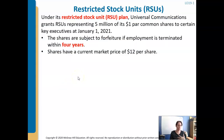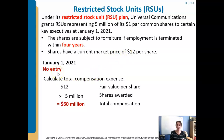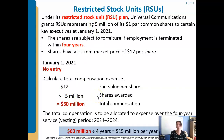Under its RSU plan, Universal Communications grants RSUs representing 5 million of its $1 par common shares to key executives on January 1st. Shares are subject to forfeiture if the employee is terminated within four years. The shares have a current market price of $12 per share. On January 1st, when awarding them, you record the compensation. These people are earning them over four years, so you spread the cost over four years. Total cost is $12 per share times 5 million shares = $60 million, so you record $15 million per year in compensation expense.